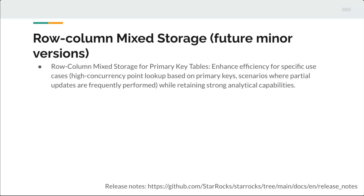In columnar storage, say you have a column called employee number — we store the data vertically as just a column of employee numbers rather than rows with first name, last name, and employee number together. This is much faster for operations like distinct counts, because you just look at the employee number column and do a count against it rather than looping through every row. By providing row data inside of the columnar structure, we don't have to do full row scans, which allows us to do faster lookups on primary key tables for specific use cases.